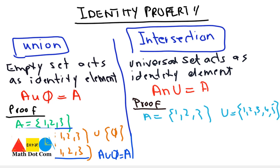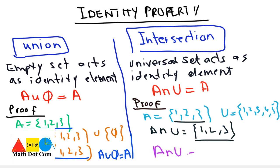We take the universal set as {1, 2, 3, 4, 5} and A as a subset. Then A intersection U means finding common elements of {1, 2, 3} and {1, 2, 3, 4, 5}, which gives {1, 2, 3} — the set itself. This proves A intersection U equals A. So the identity element of union is phi, and the identity element of intersection is the universal set.